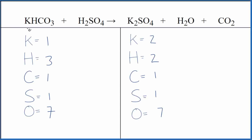Let's balance the equation for KHCO₃ plus H₂SO₄, potassium hydrogen carbonate, also called potassium bicarbonate, and sulfuric acid.